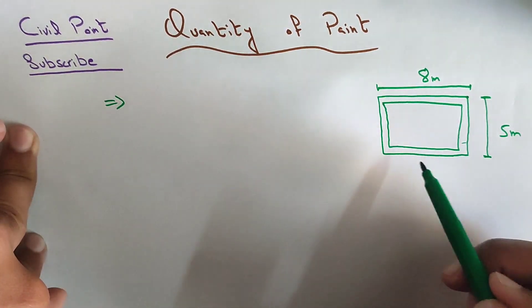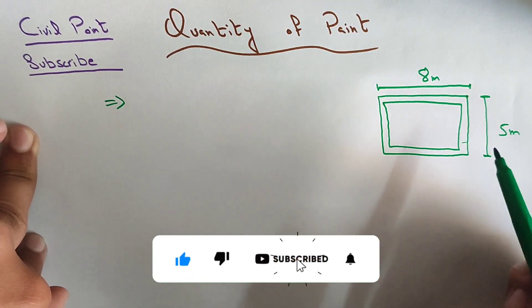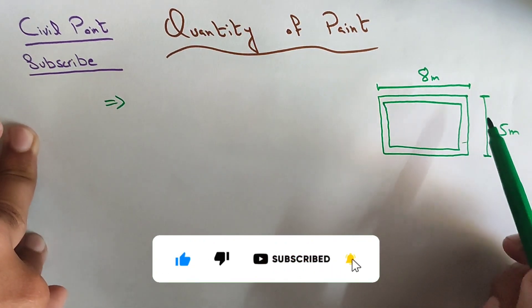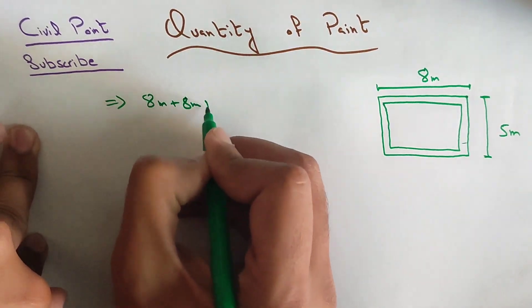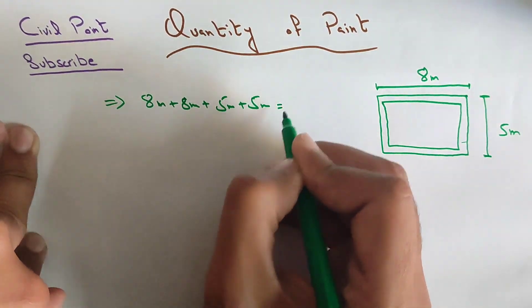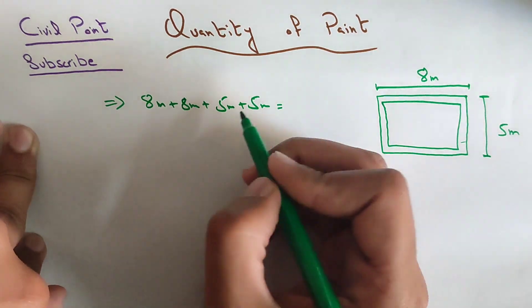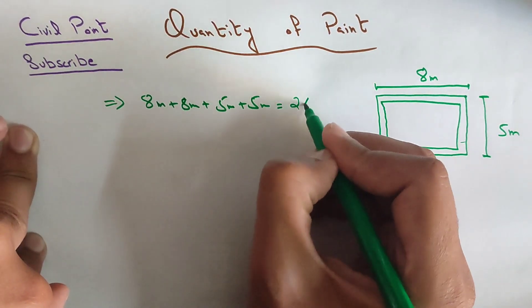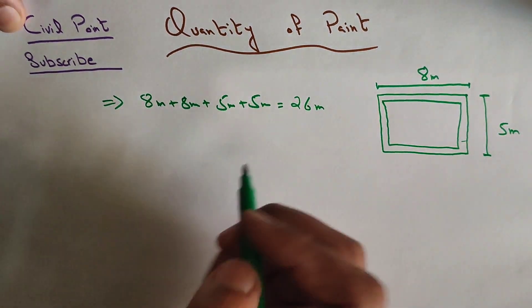So we have 8 meters plus 8 meters plus 5 meters plus 5 meters. That's 8 plus 8 is 16, plus 5 is 21, plus 5 is 26 meters. This will be our first step - we measure the length of all the walls.